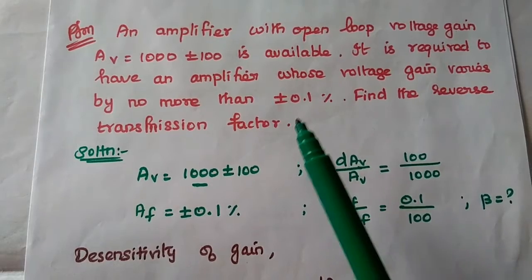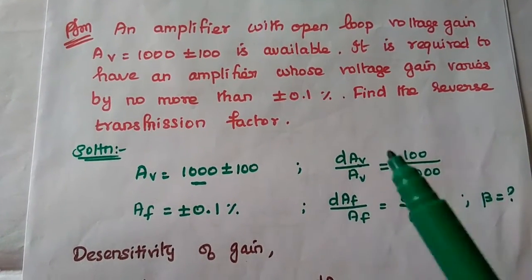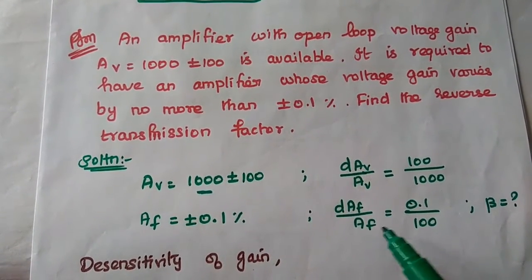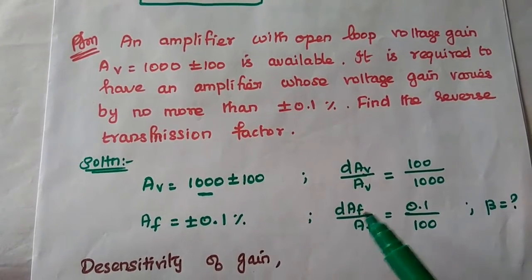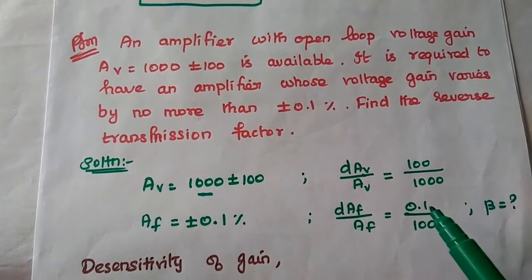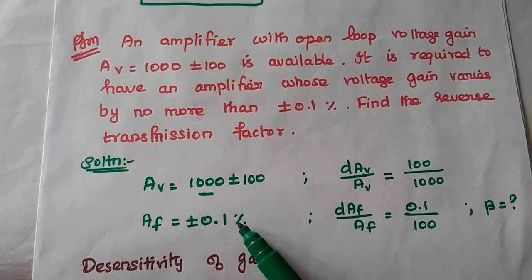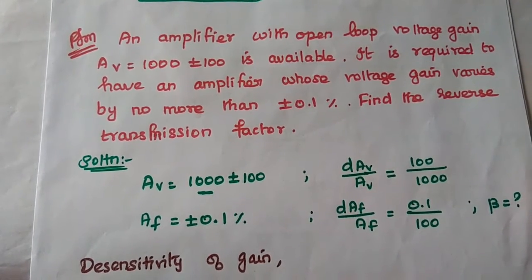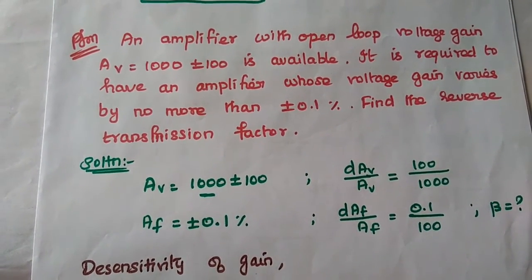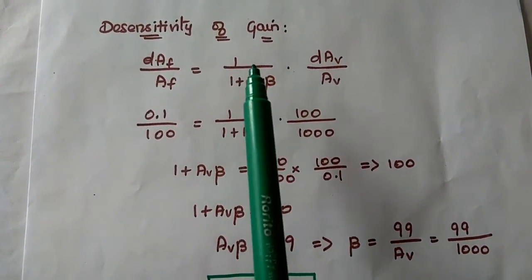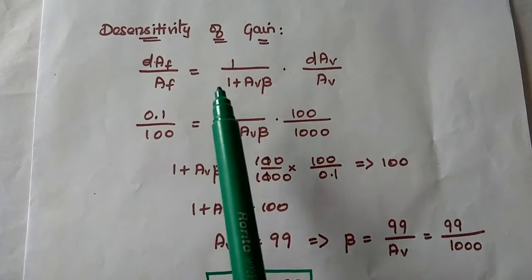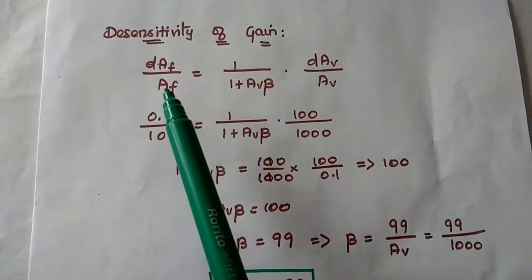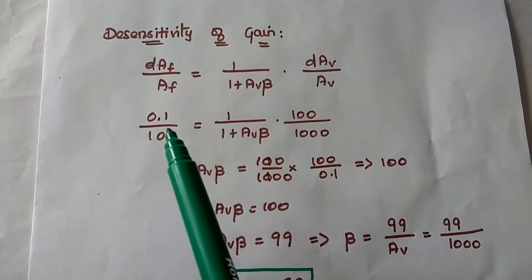The ±0.1% variation in gain with feedback means DAF/AF = 0.1/100. Using the desensitivity of gain formula: DAF/AF = (1 / (1 + AV·β)) × (DAV/AV). Substituting DAF/AF = 0.1/100 and DAV/AV = 100/1000.